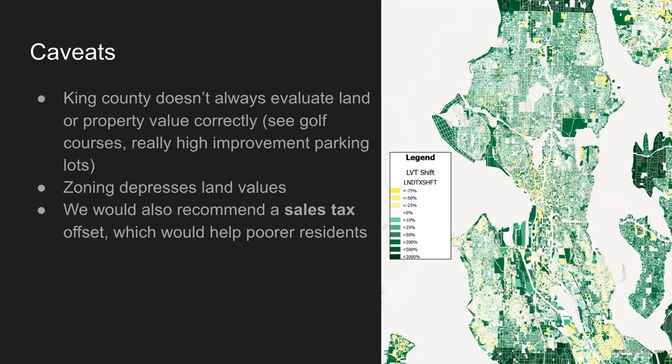Some caveats: King County isn't always assessing land correctly. A golf course — essentially an empty field — is assessed as if improvements have been made by leaving it vacant, which isn't true. Within that golf course you could house several thousand people. Also, zoning depresses land values, so upzoning would raise land values in those areas. We'd also like to calculate a sales tax offset — that's harder since it depends on individual spending habits, but even homes seeing tax increases might see total cost of living go down if we offset sales taxes simultaneously.